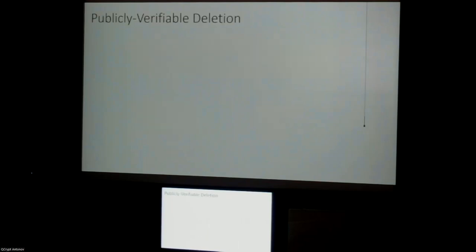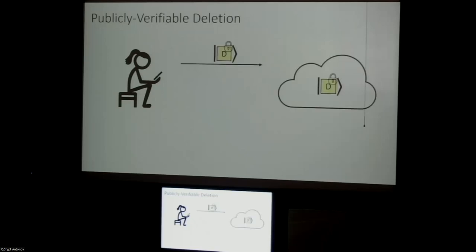I'll start by describing the basic setting of certifiable deletion and publicly verifiable deletion. We have Alice on her phone with some data — maybe photos or other information — that she wants to upload to the cloud. She sends an encryption of her data to the cloud so it can store it for her, and we want this to be private storage. We assume there's some encryption scheme so the server can't recover Alice's private data. This is pretty standard and done all the time.